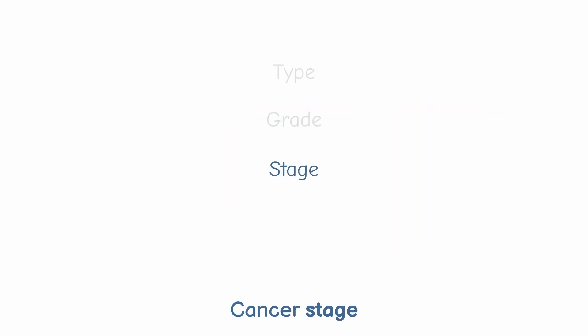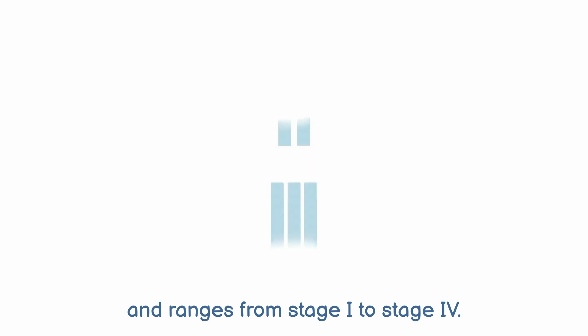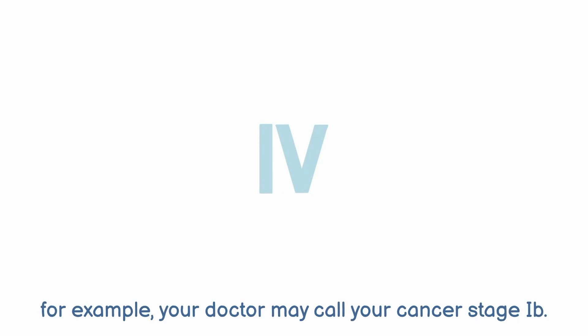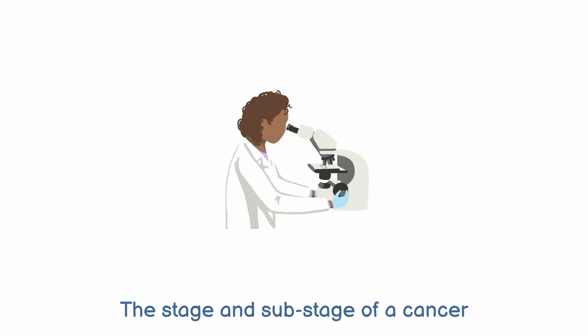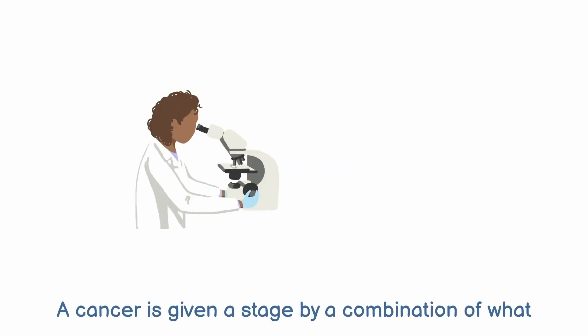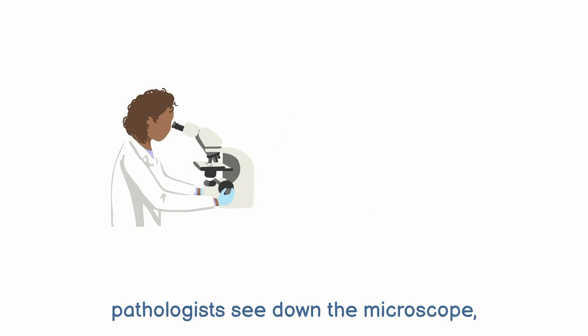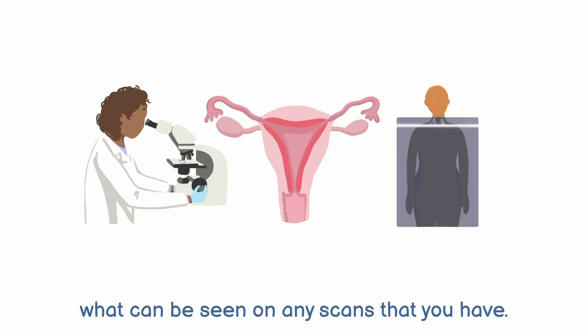Cancer stage. Stage is a measure of how far a cancer has spread and ranges from stage 1 to stage 4. Each of these stages also has sub-stages; for example, your doctor may call your cancer stage 1b. The stage and sub-stage of a cancer affects the treatment that is given. A cancer is given its stage by a combination of what pathologists see down the microscope, what is seen during surgery, and what can be seen on any scans that you have.